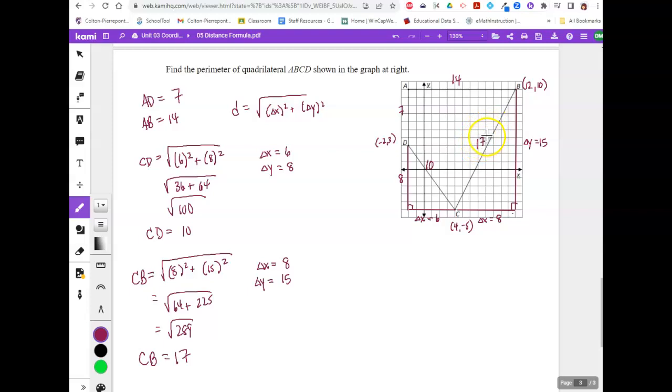So to find the perimeter of the quadrilateral, we have to add the four sides. So AB is 14. BC is 17. CD is 10. And DA is 7. So if I add those together, I get 14 plus 17 plus 10 plus 7. The perimeter is going to be 48. And that is my perimeter.